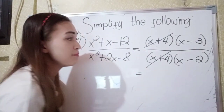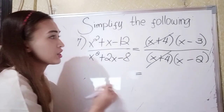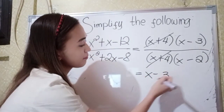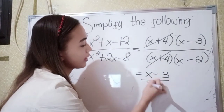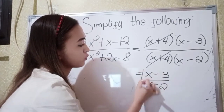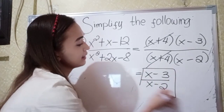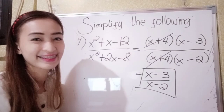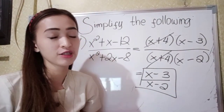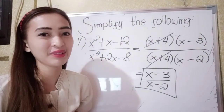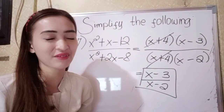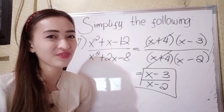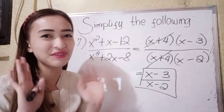So the simplified form of this expression is x minus 3 over x minus 2. That is our final answer. If you have more questions, please comment down below, and don't forget to subscribe to my channel. That's how we end our lesson for today. Bye!